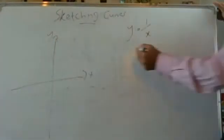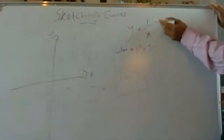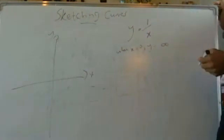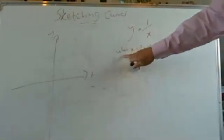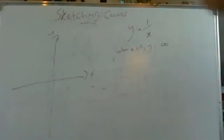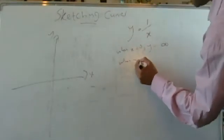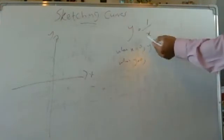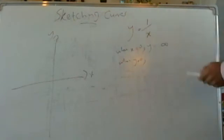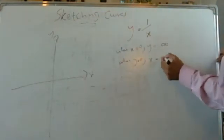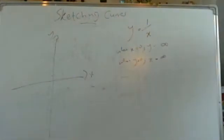When x equals 0, y equals 1 over 0, which is infinity. So x equals 0 is an asymptote — the graph does not exist when x equals 0, so it doesn't cross the y-axis. And when y equals 0, rearranging gives x equals 1 over y, so 1 over 0 is again infinity. Both the x and y axes are asymptotes.